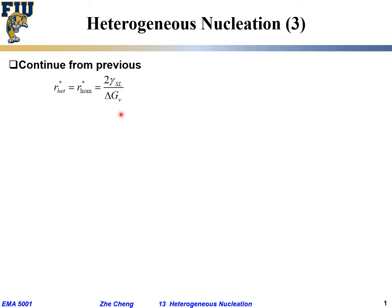The delta gv term is the volume free energy difference between solid and liquid — a positive value that depends on undercooling, or delta T. The larger the delta T, meaning the lower you are below the melting point, the larger delta gv becomes, and therefore the smaller the critical radius r*.